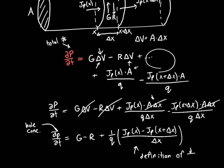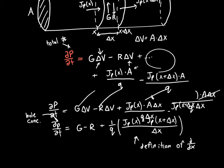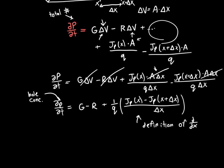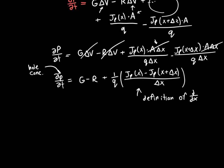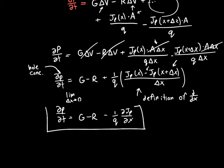If we take the limit as delta x approaches zero, we get exactly the equation for the derivative of the hole current. Taking that limit, dp/dt equals g minus r. Since this is the definition of the negative derivative (because we have plus delta x in the denominator and a minus sign), it becomes minus (1/q) times dJp/dx. And we're done — this is the continuity equation.